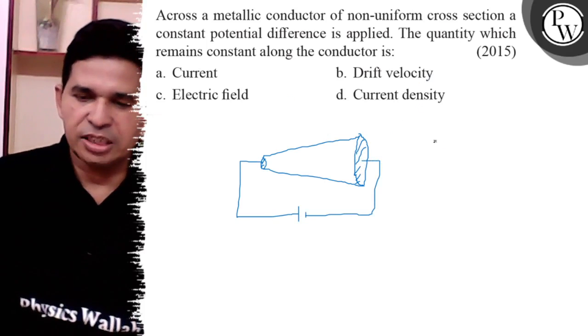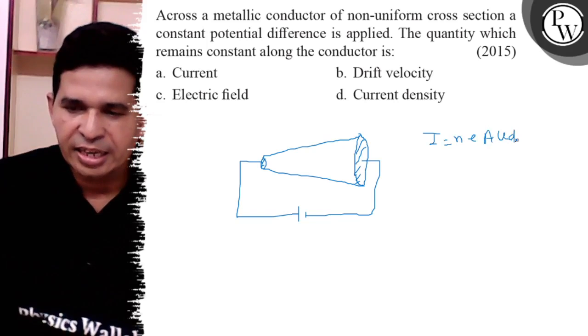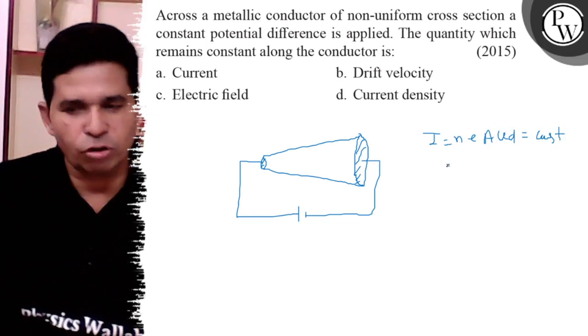Here, drift velocity is not constant because current is constant (I = nEAvD), and it is constant because incoming current is equal to outgoing current, otherwise Kirchhoff's law is invalid.